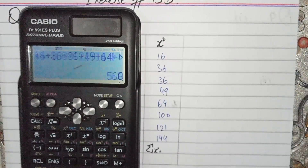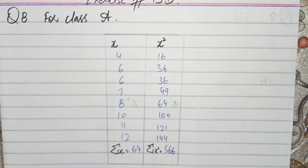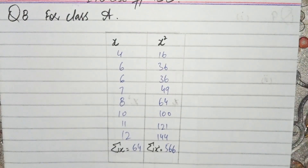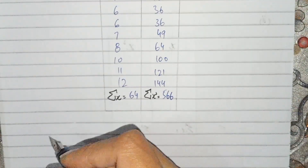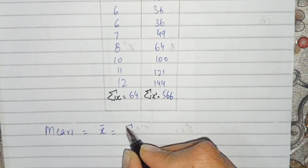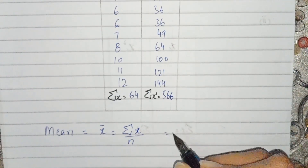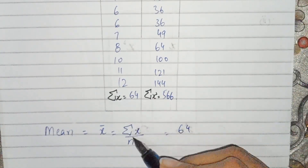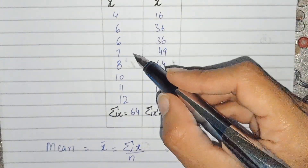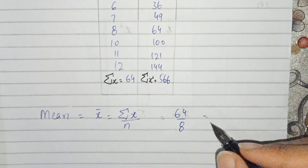The sum of x² values gives us 566. Now we find the mean first. The formula of the mean is sum of x over n. We put the value 64 as the sum of x, and n = 8 (there are 8 values). Dividing gives us a mean of 8.